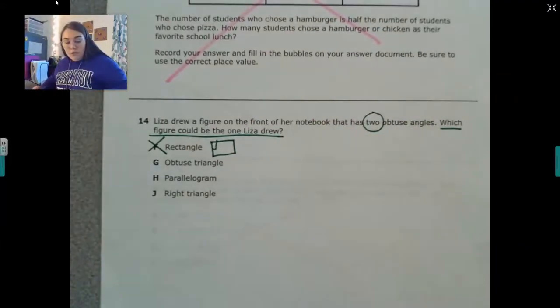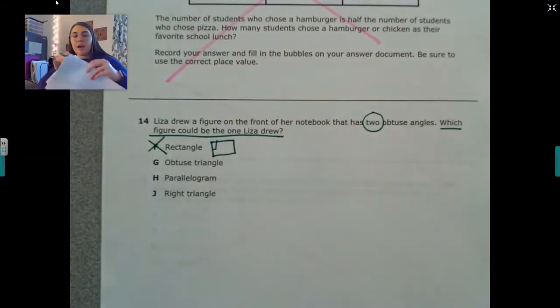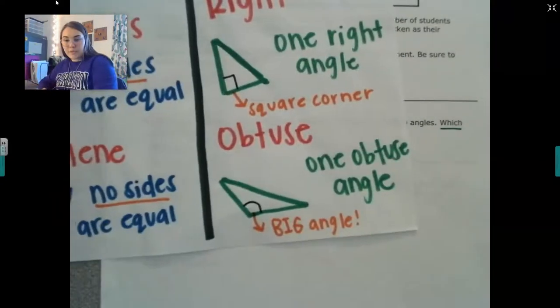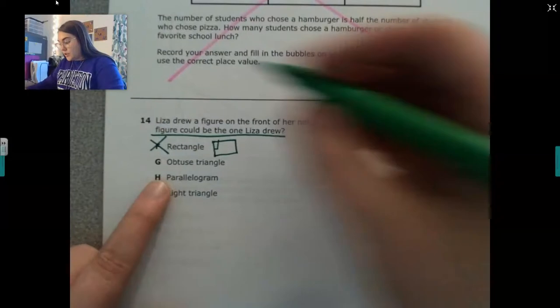An obtuse triangle. An obtuse triangle from our anchor chart, it only has one obtuse angle. So it can't have two.